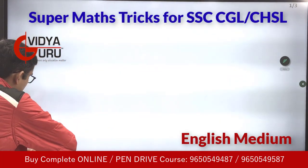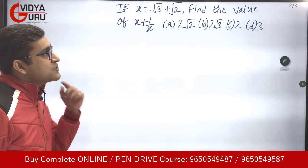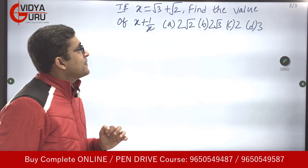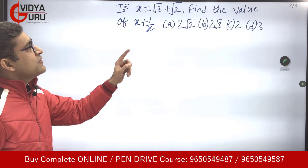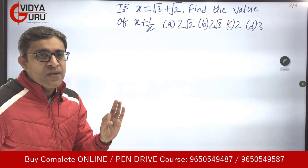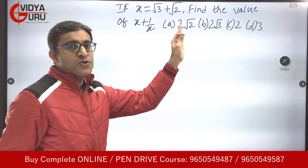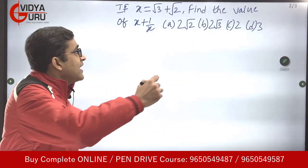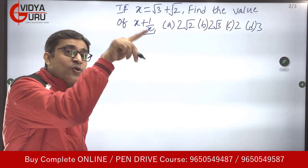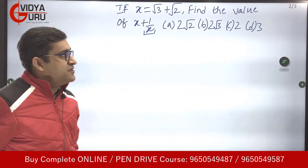Now let's look at the first question for today. It says x is equal to √3 + √2, and we have to find out the value of x + 1/x. We have the value of x but not 1/x, so from the given value we will have to find 1/x first, then we'll be able to find the value of the expression.